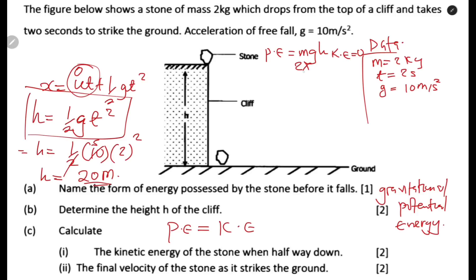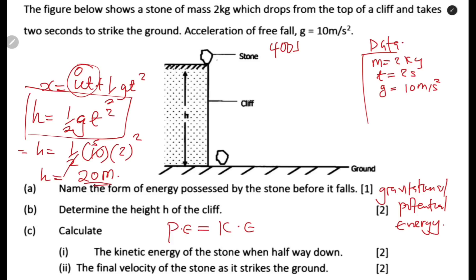Let us calculate the potential energy at the top. Mass is 2 × gravity 10 × height 20 = 400 joules. When the stone starts falling and enters motion, potential energy starts converting to kinetic energy — it doesn't convert all at once but gradually as it moves. Speed is directly proportional to kinetic energy, so potential energy is being converted to kinetic energy.